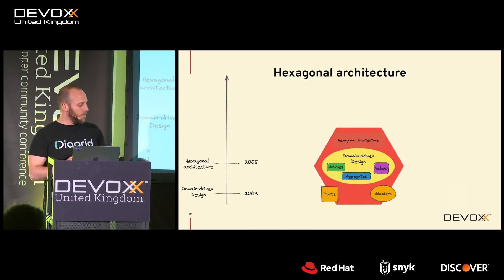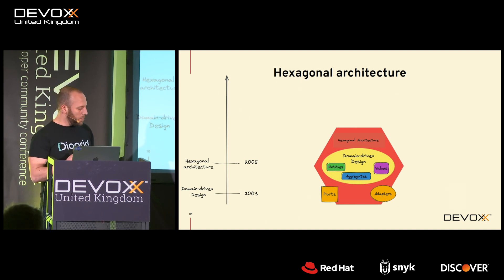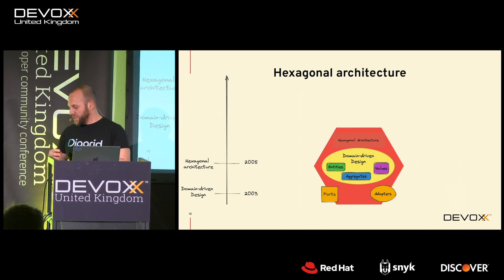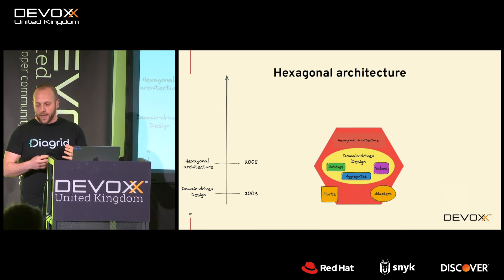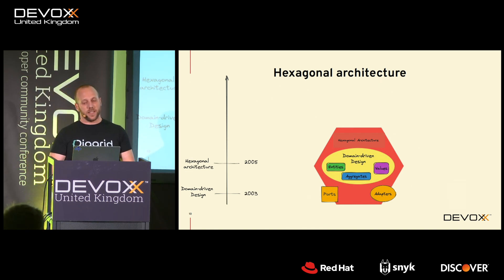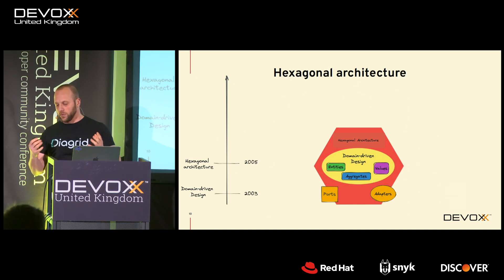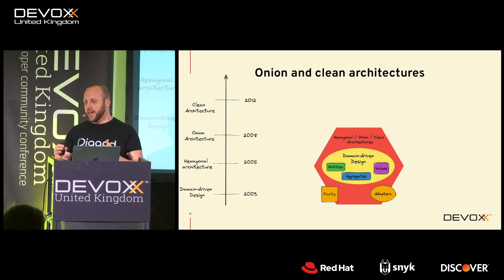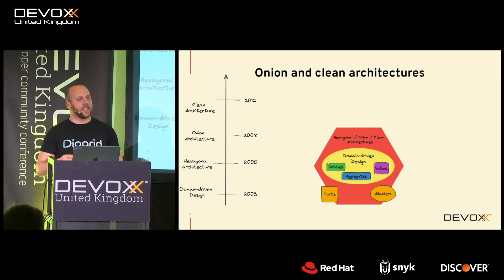A second influential idea is hexagonal architecture, a term coined by Alistair Cockburn in an attempt to address some of the structural pitfalls of three-tier applications. It helps identify boundaries between different layers, assigns responsibilities, and isolates external dependencies with a standardized approach called ports and adapters, which is another name for this pattern. There were also related ideas such as onion architecture and clean architecture by Uncle Bob, and they all emphasized the separation of concern between the different layers within your application.